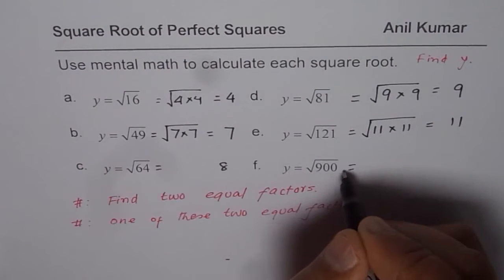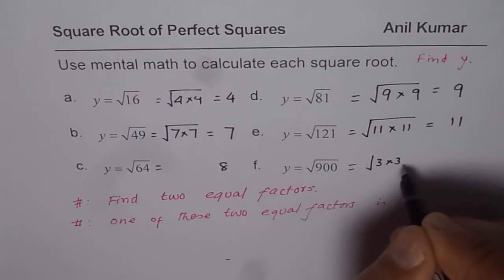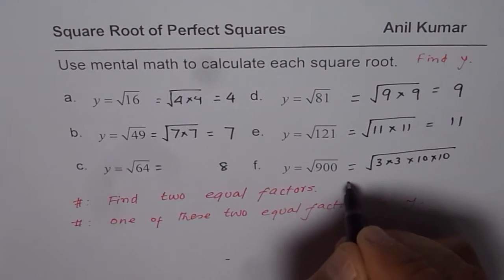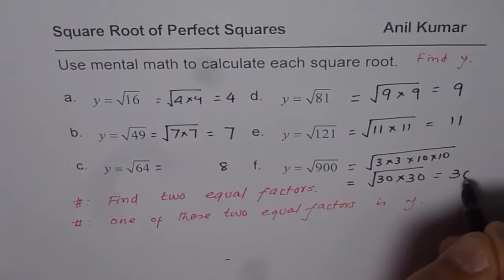For 900, you can treat this as 900. So 9 you get by 3 times 3, and 100 you get by 10 times 10. So you could write this as square root of 30 times 30. So the answer is 30.